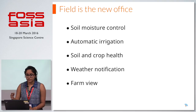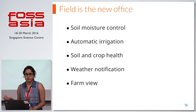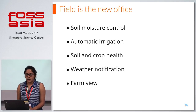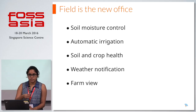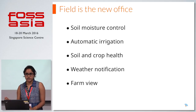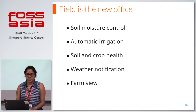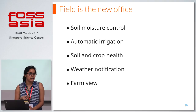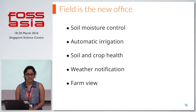A few basic concepts included in the farm automation system are: soil moisture control and automatic irrigation, so depending on the soil moisture the irrigation system will be operated. And soil and crop health, where the acidity levels and pH levels of the soil are detected and accordingly fertilizers or pesticides are given to the field.